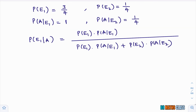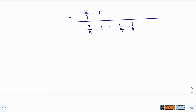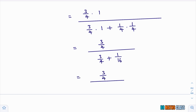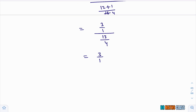Substituting into the formula: P(E1|A) = [P(E1) × P(A|E1)] / [P(E1) × P(A|E1) + P(E2) × P(A|E2)] = (3/4 × 1) / (3/4 × 1 + 1/4 × 1/4) = (3/4) / (3/4 + 1/16). The LCM of the denominator is 16, giving (12/16 + 1/16) = 13/16. So we get (3/4) ÷ (13/16) = (3/4) × (16/13) = 12/13.